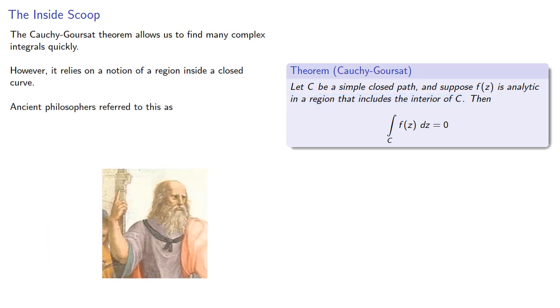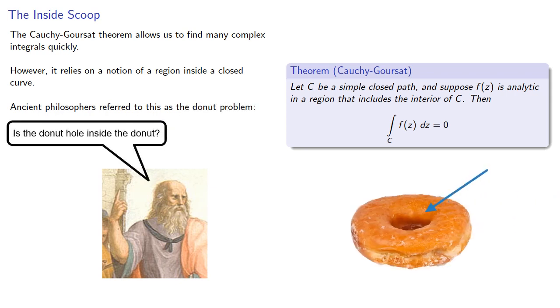Ancient philosophers referred to this as the donut problem. Is the donut hole inside the donut? In two dimensions, a donut... wait, an annulus is a region between two closed curves.